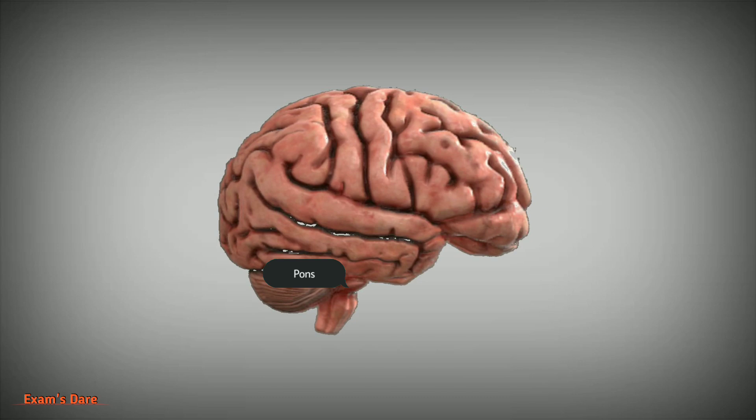It is responsible for regulation of breathing. Medulla oblongata is the posterior part of the brain. It controls automatic actions of the body such as heart rate, breathing, and blood circulation.